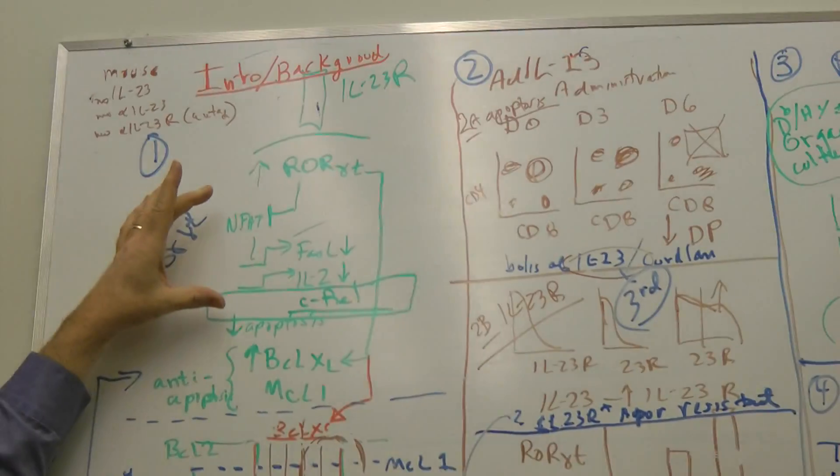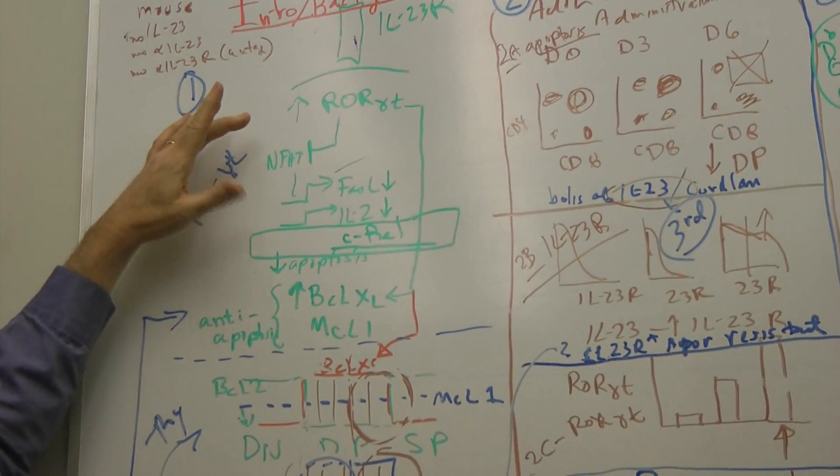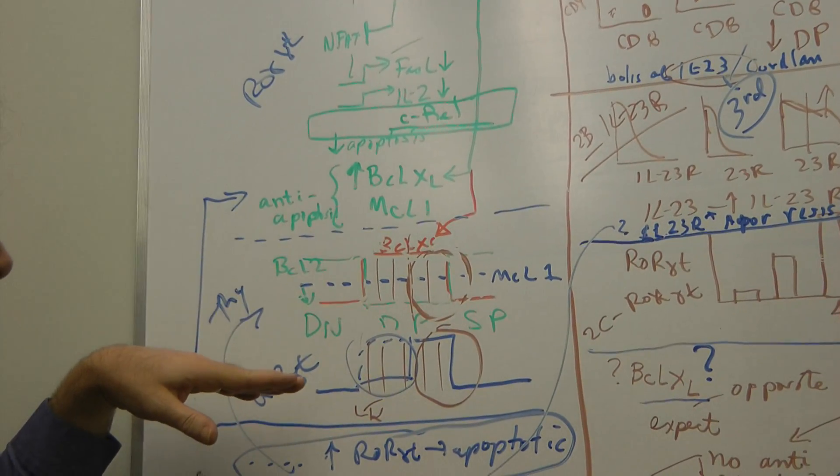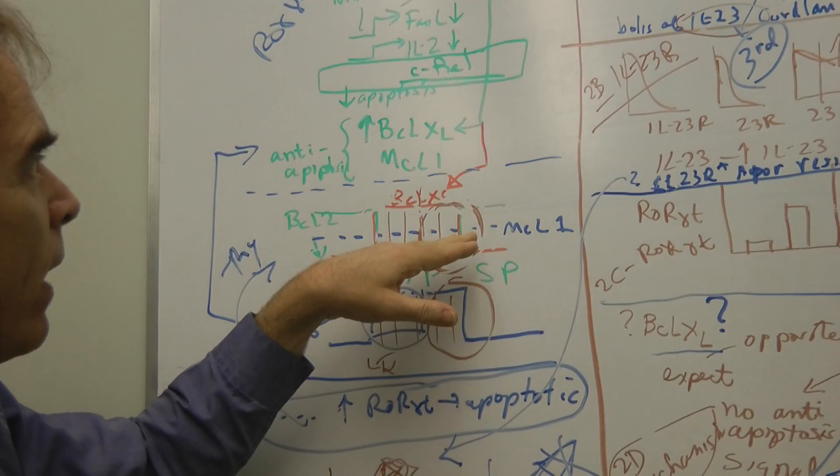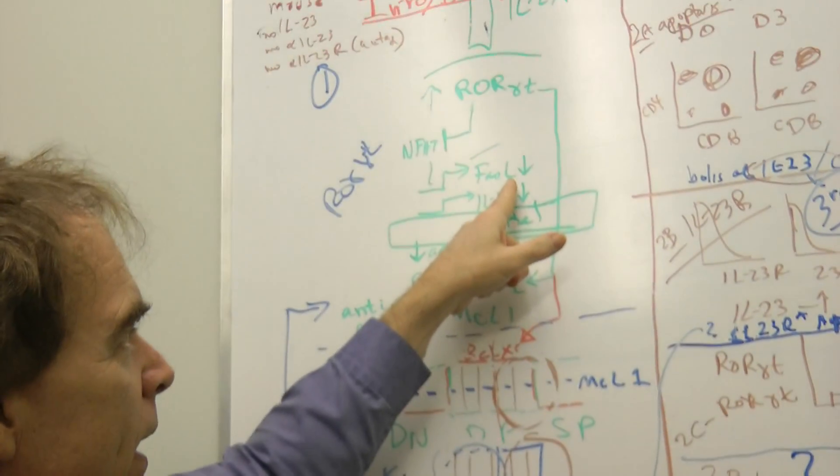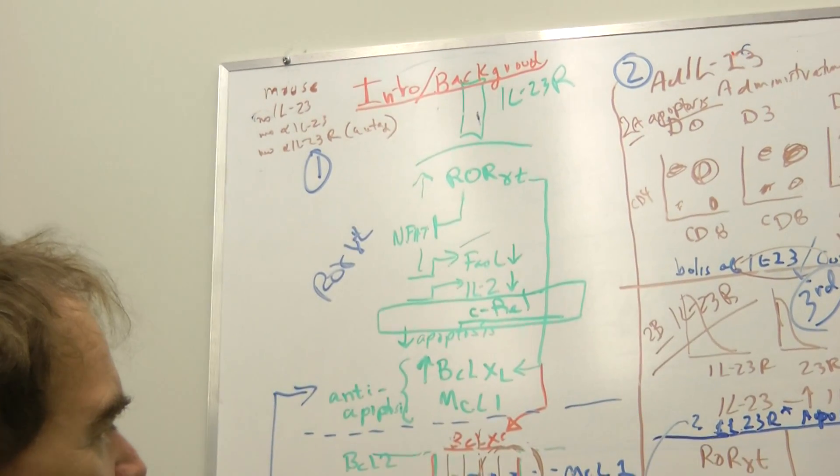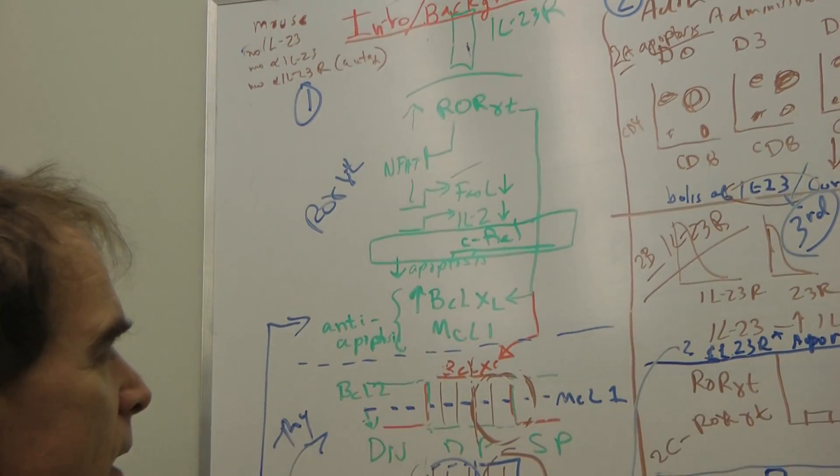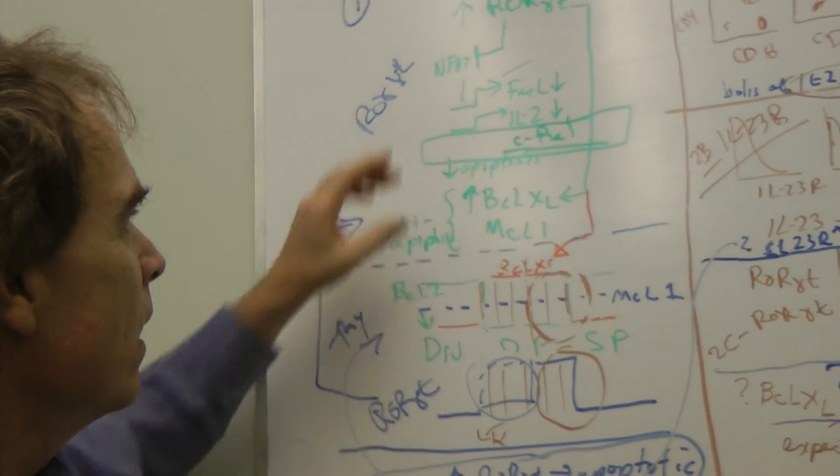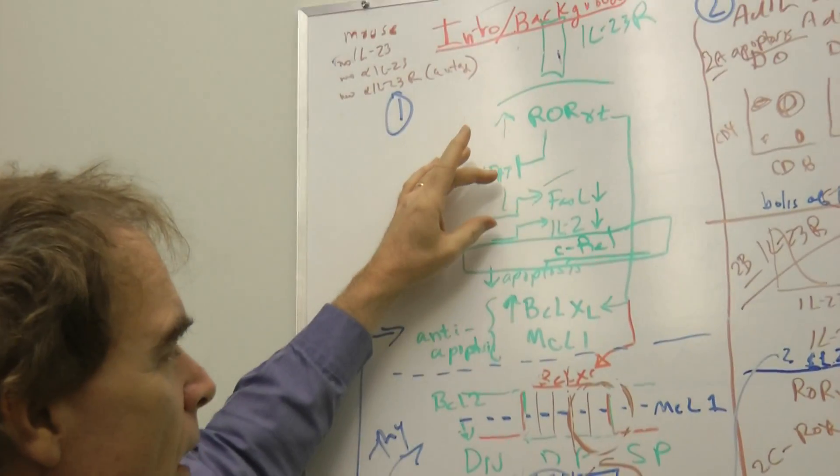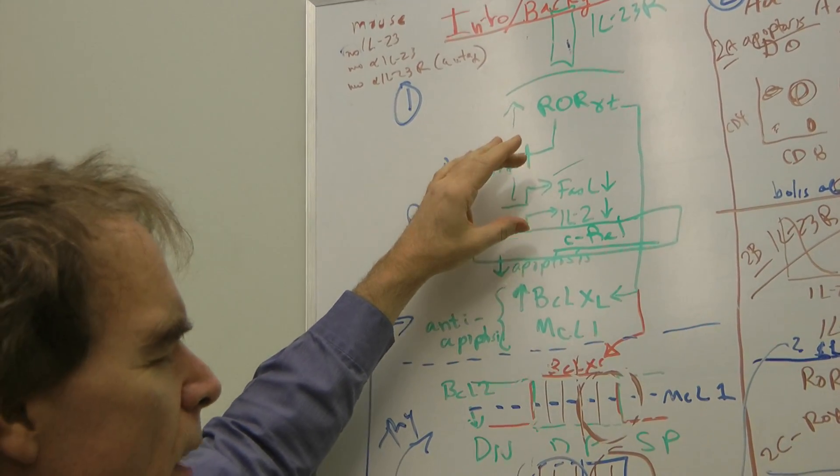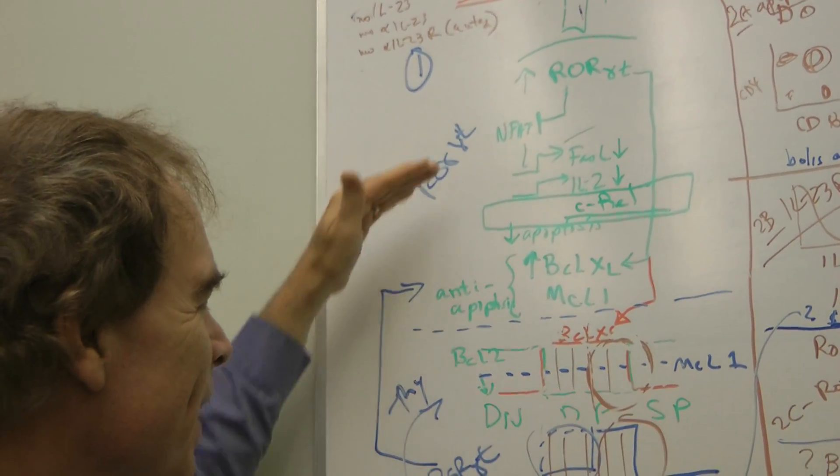But what that does is, we also know that ROR gamma T upregulates BCL-XL. So you can see the situation here. Downregulation of Fas ligand decreases apoptosis. Upregulation of BCL-XL decreases apoptosis. Not sure about IL-2 downregulation, but this is the original findings by you and Yoo. This downregulation.